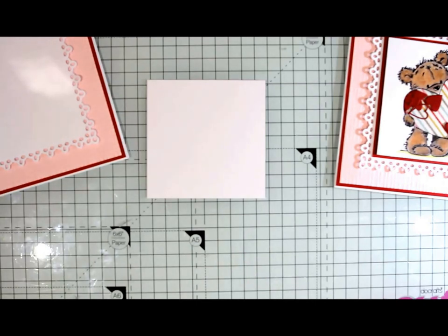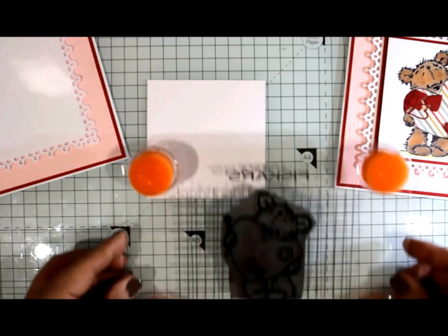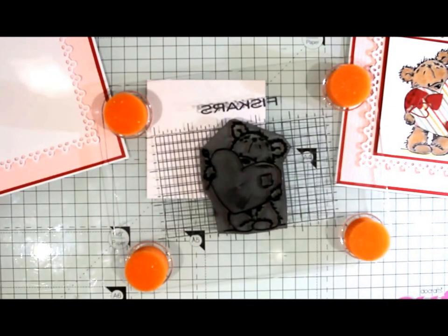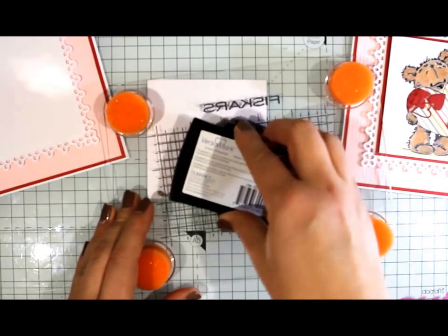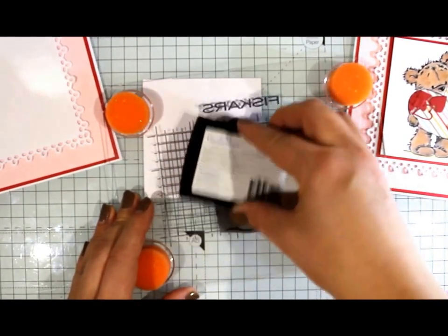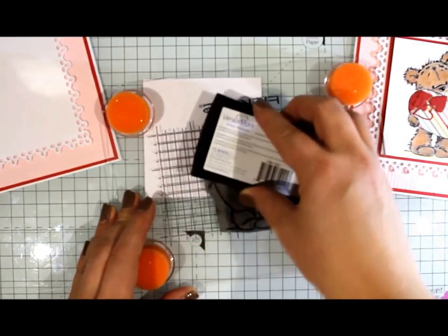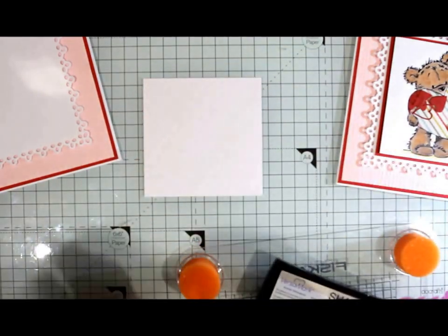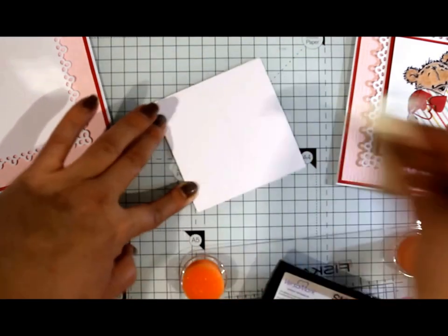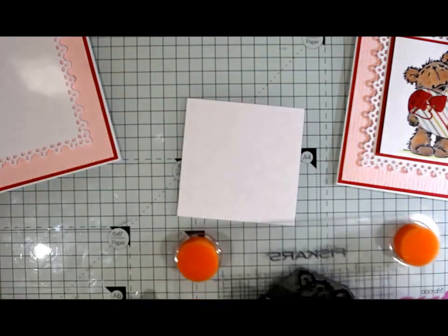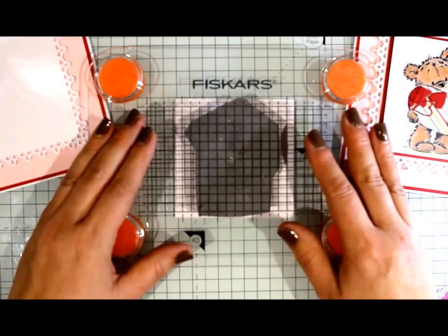We're going to emboss the bear on there using Versamark ink pad. I've got my stamp already mounted. Have a good Versamark. We're going to go over it with your embossing buddy first to get rid of the static.